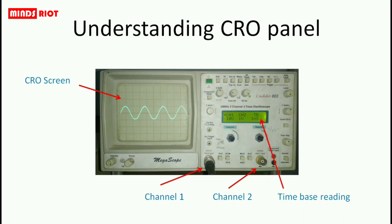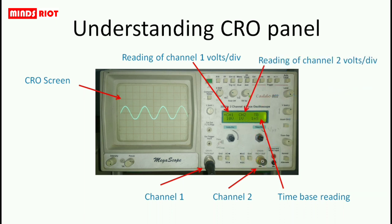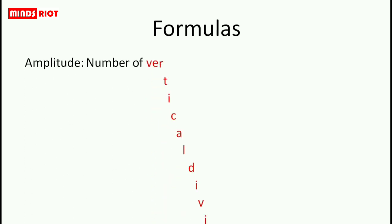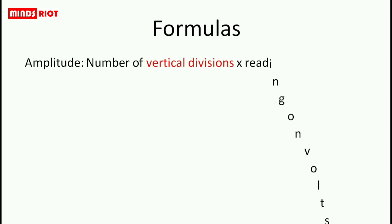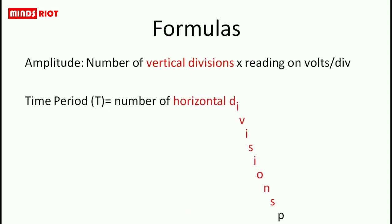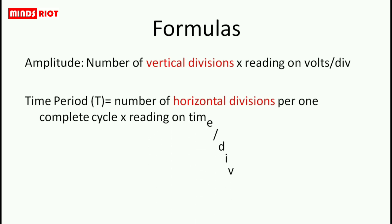Now, different readings: time base, volts per division, etc. Formulas to calculate amplitude, time period, and frequency: to calculate amplitude, you need vertical divisions covered by the waveform and the reading on volts per division. To calculate time period, you need horizontal divisions and the reading on time per division. Frequency is the reciprocal of time period.